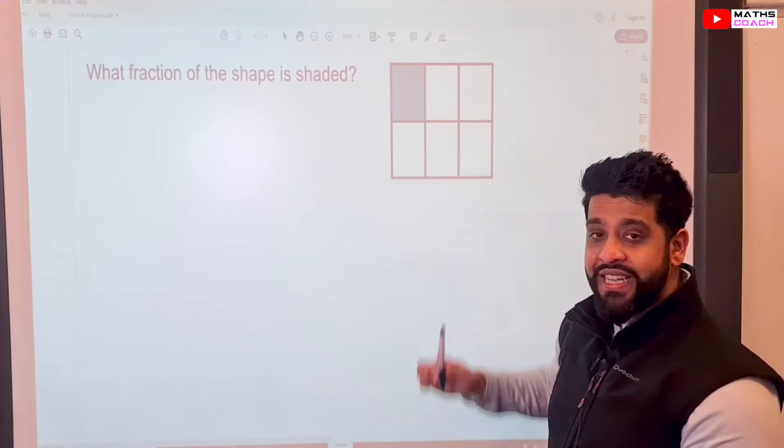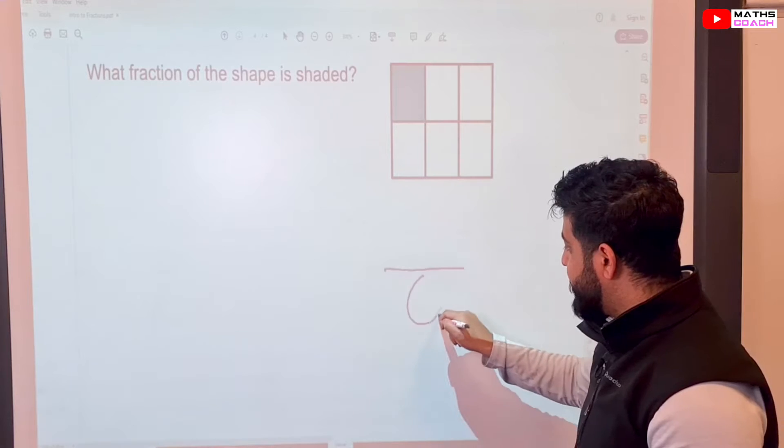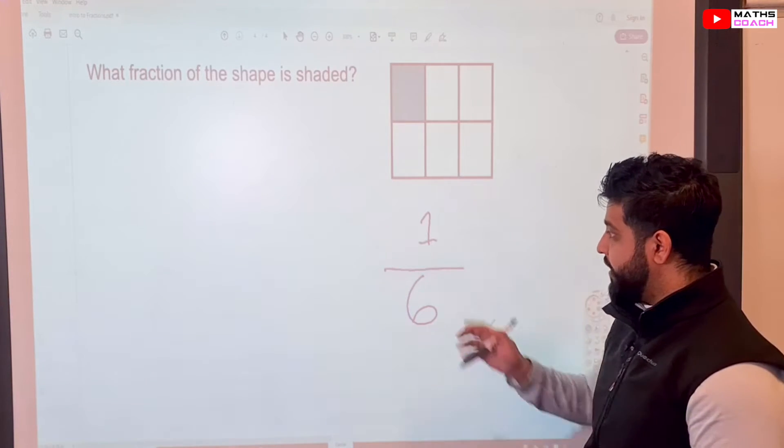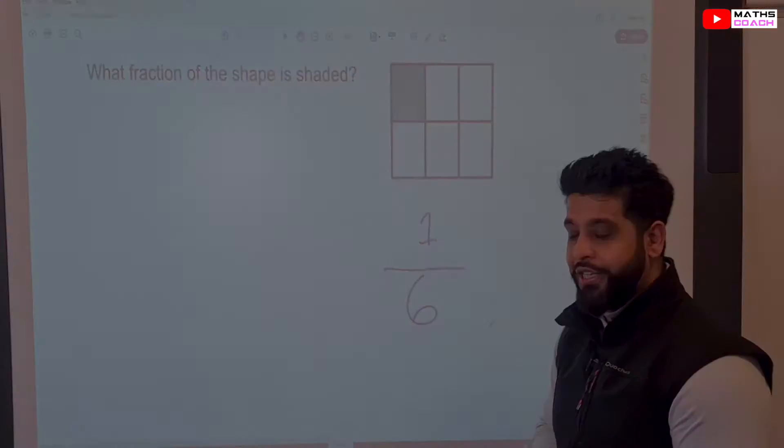One, two, three, four, five, six. The denominator will be six, and one out of those six parts is shaded. So one out of six is shaded.